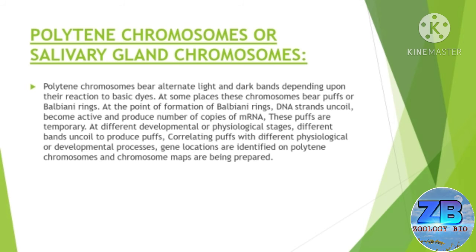In the polytenic chromosomes, or salivary gland chromosomes, polytenic chromosomes bear alternate light and dark bands depending upon their reactions to basic dyes. At some places these chromosomes show puffs or Balbiani rings. At the point of formation of Balbiani rings, DNA strands uncoil, become active and produce a number of copies of mRNA.